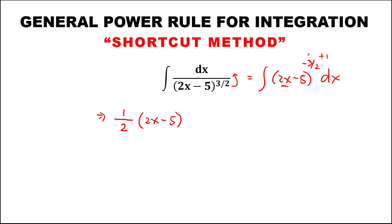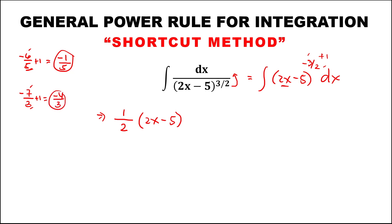For the shortcut method with fractional exponents, add the two numbers and put the negative in the denominator. For example, negative 6 over 5 plus 1: add negative 6 plus 5, that's negative 1, and copy the denominator 5. Similarly, negative 7 over 3 plus 1 gives negative 4 over 3. For negative 3 over 2 plus 1: that's negative 1, copy denominator 2, then over the same exponent, plus C.